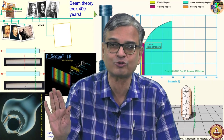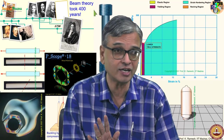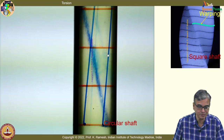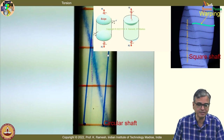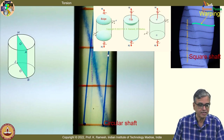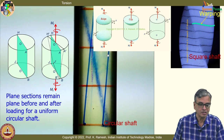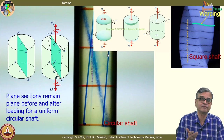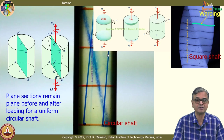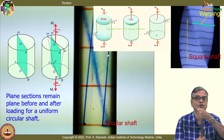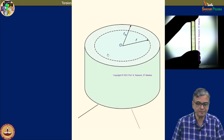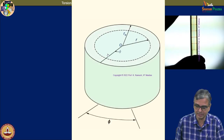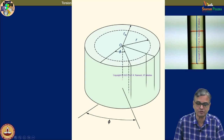We postpone torsion of non-circular cross sections to the next-level course. It is solvable — Saint-Venant is the first person to solve it. Plane sections remain plane before and after loading — we established this by a thought experiment. You can also see it visibly when you take a simple circular shaft, draw lines, and then twist it. There is also a nice animation that shows what we did to find the strain components.